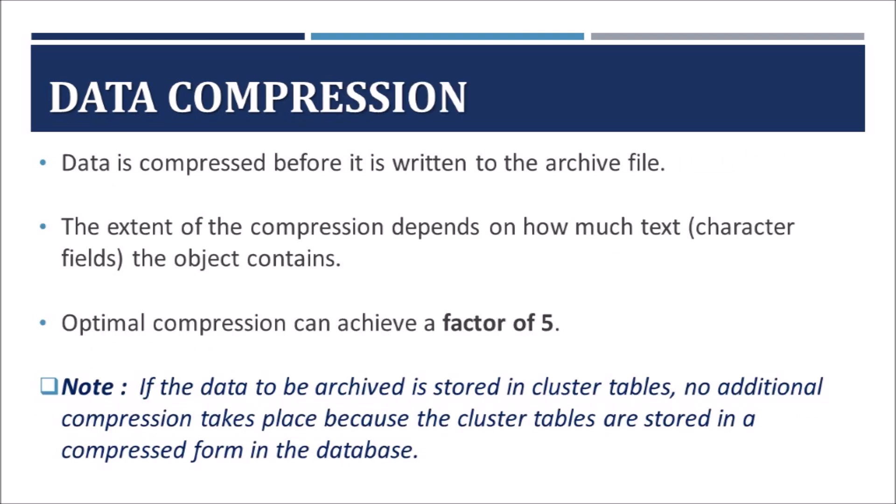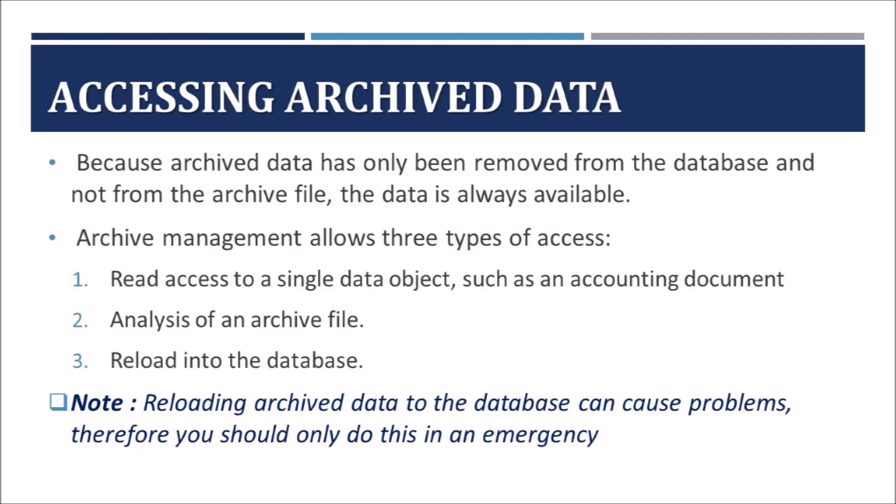The next important feature is data compression. Before data is written to an archive file, it is compressed and stored. This compression takes place automatically and can achieve up to a factor of 5. How much compression takes place depends on the fields in the business object. Note that if we are archiving data from cluster tables, compression will not take place additionally, because the data in cluster tables is already stored in compressed format. Hence, no additional compression takes place while archiving that data.